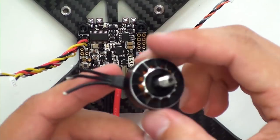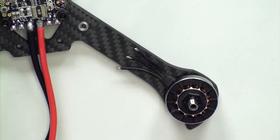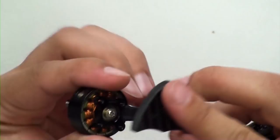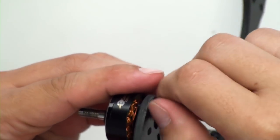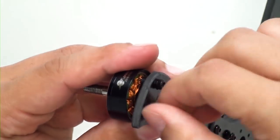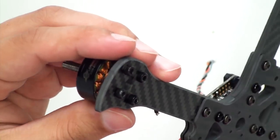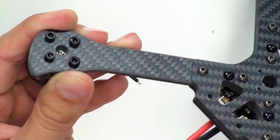Now we can start installing the motors on the frame. Take one motor, sit it down there. Grab the bolts that come with your motor. Flip it over, throw one in, and you're going to want to line that up with the motor and do that for all four sides.